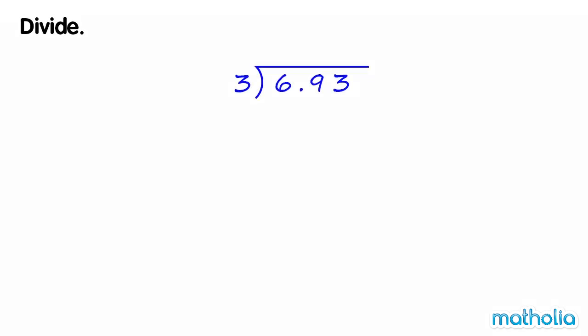Divide. Let's find 6.93 divide 3. Divide the ones: 6 ones divide 3 equals 2 ones. 3 times 2 ones equals 6 ones. 6 ones subtract 6 ones equals 0.